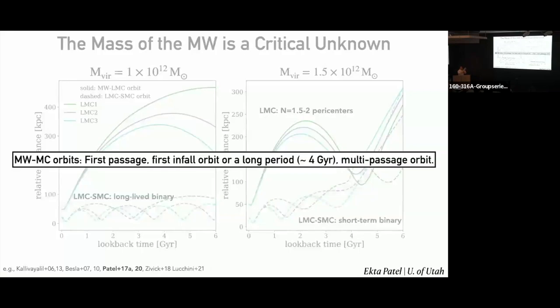In summary, there are these two possible answers. Statistically, when you account for all uncertainties on the 6D phase space, you will get the first infall passage much more often. You will get the second long-period multiple-passage orbit at the single-digit percent level. So from a statistical point of view, the first infall is still favored just by the choice of proper motions.